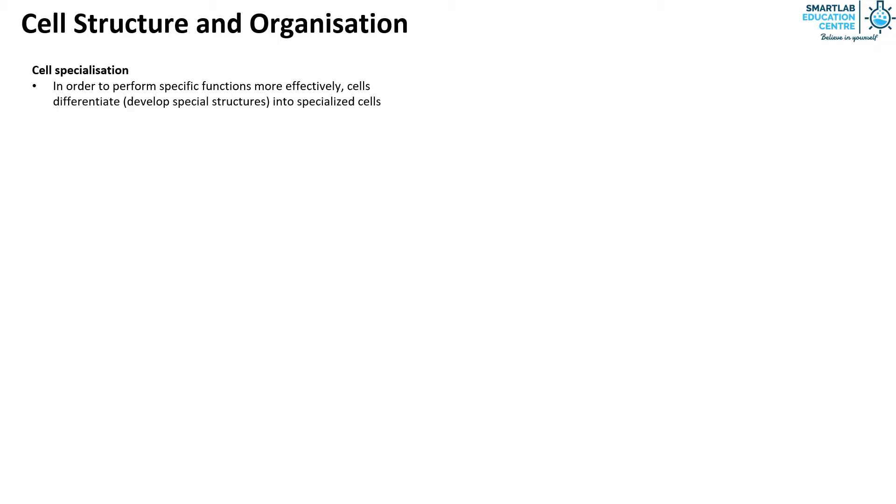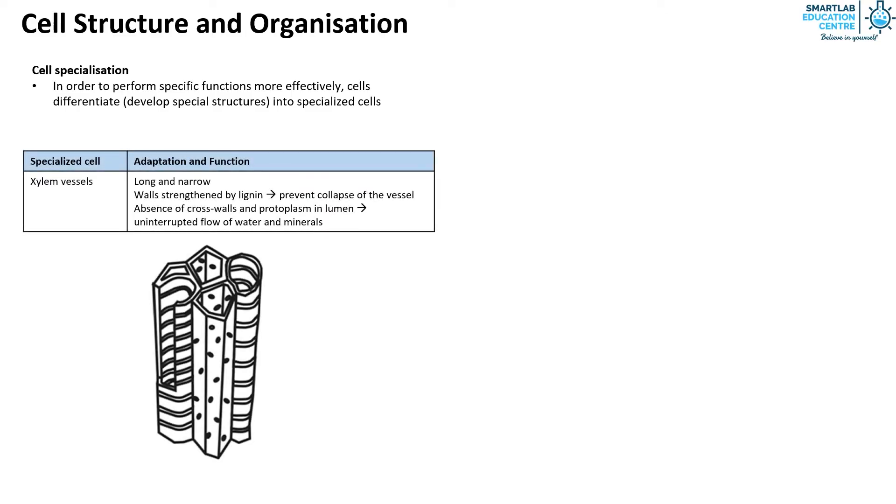The first specialized cell is the xylem vessels. They are long and narrow, and their walls are strengthened by lignin that prevent the collapse of the vessel. They don't have any cross walls and protoplasm in their lumen such that there is uninterrupted flow of water and minerals.